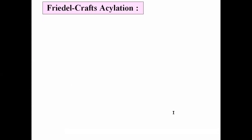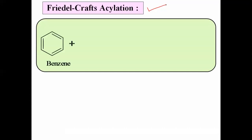The next example is Friedel-Crafts Acylation. There are two types of Friedel-Crafts reactions: alkylation (where hydrogen is replaced by an alkyl group) and acylation (where hydrogen is replaced by an acyl group). Suppose benzene is reacted with an acyl halide — for example, acetyl chloride (CH3COCl). Any R group can be used instead of CH3.